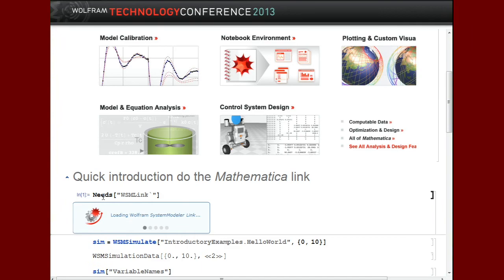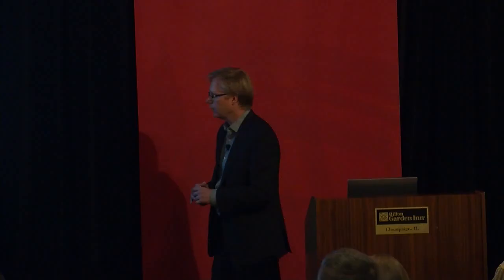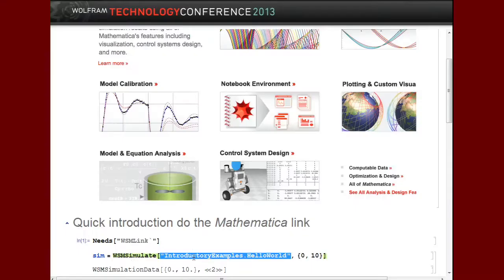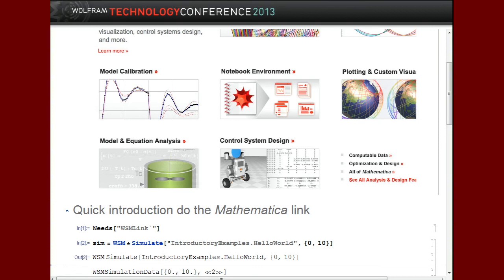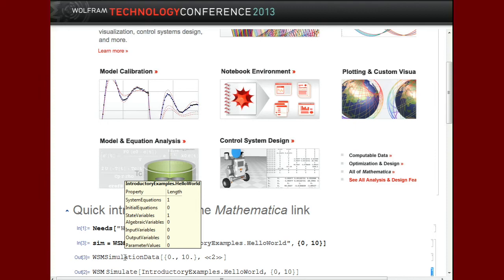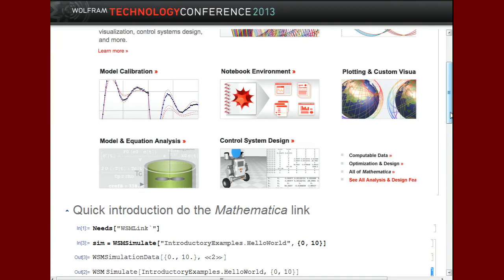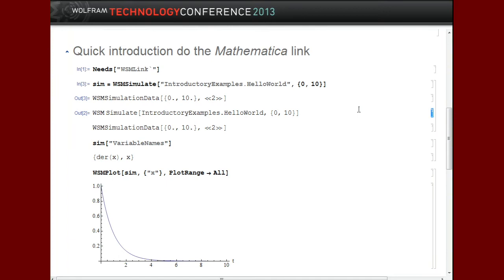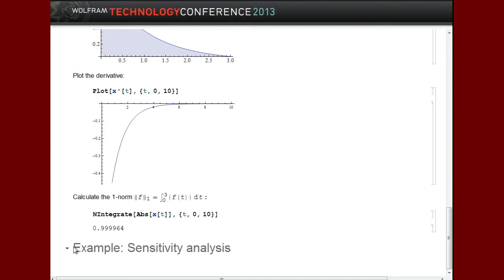So let's look at very simple examples of what you might want to do. First thing is that you set up the link using something called WSM link. So I open that link, and now I can simulate rather than within this simulation center tool, I can simulate within Mathematica, tell it which model I want to simulate, and I'll say where to save the simulation in sim in this case. And once I've done that, I can see that it returns some information about my system. It says it has one system equation and one state variable and nothing else. And I can now use this within Mathematica to do things like getting plots and things like that.